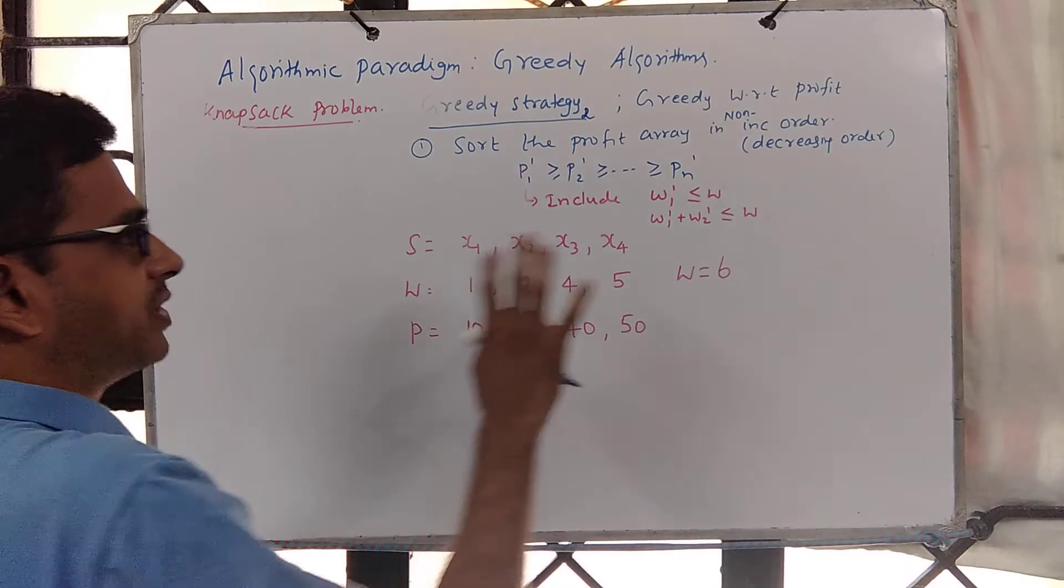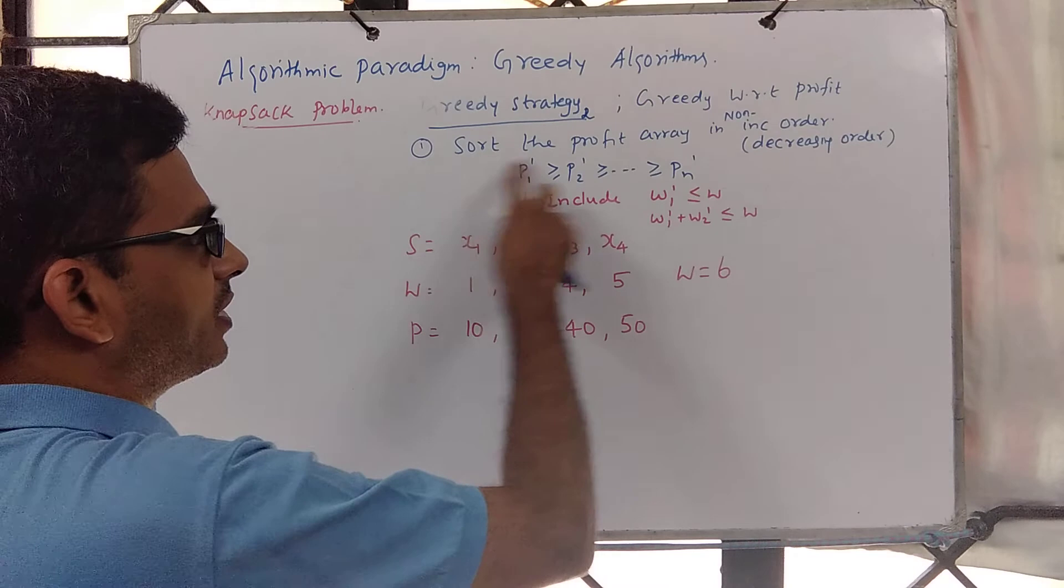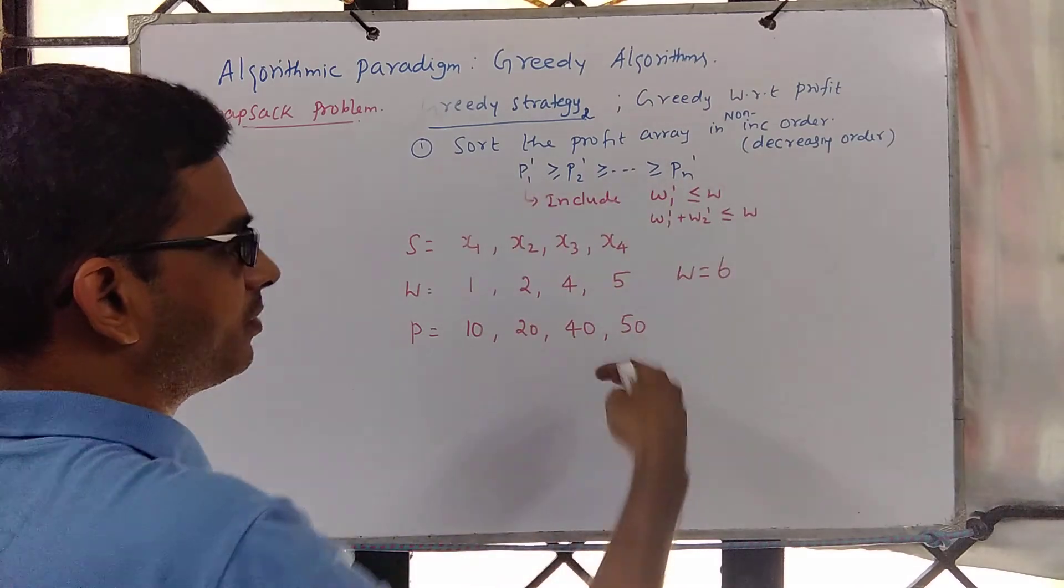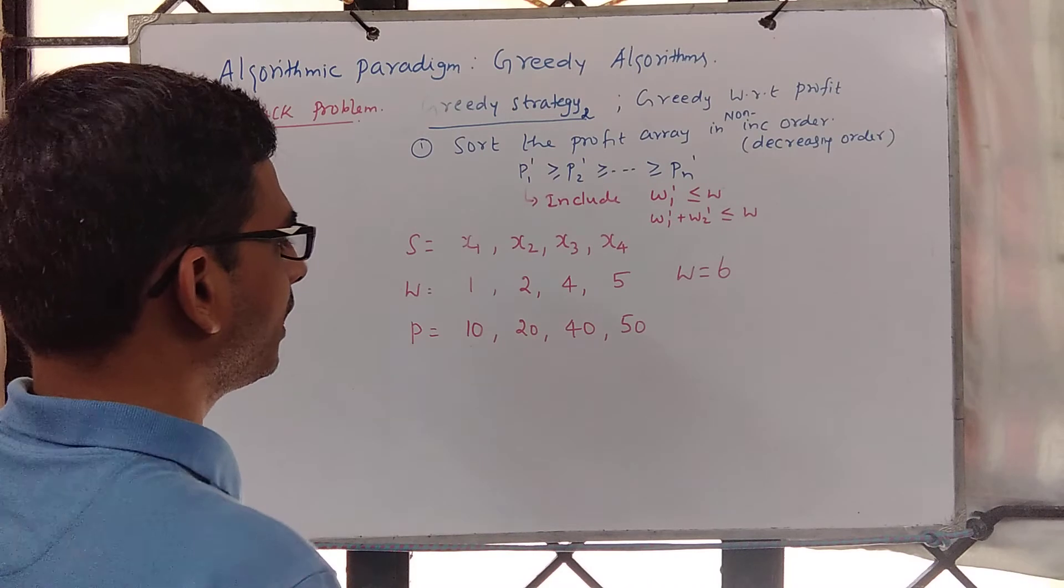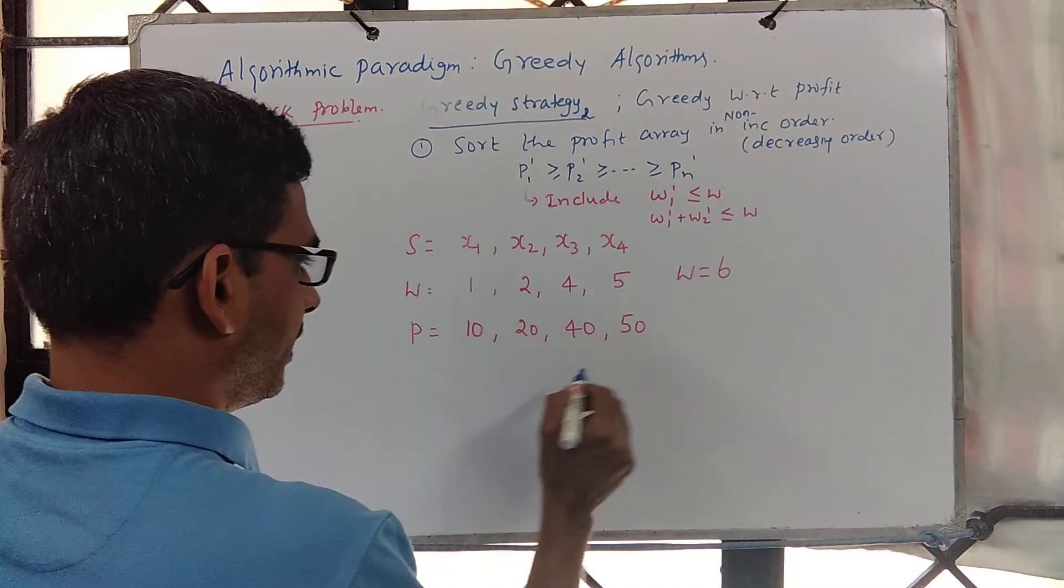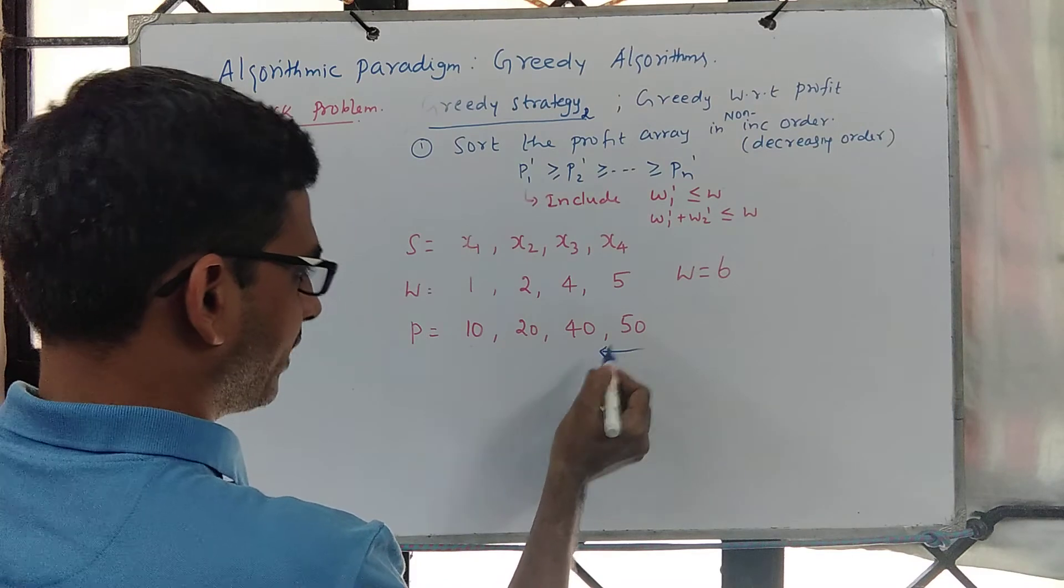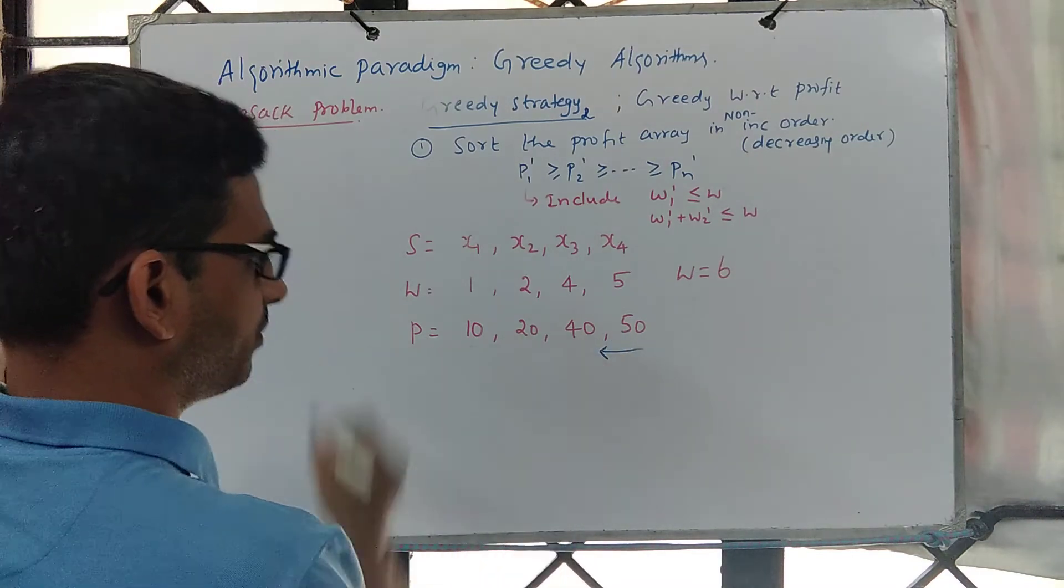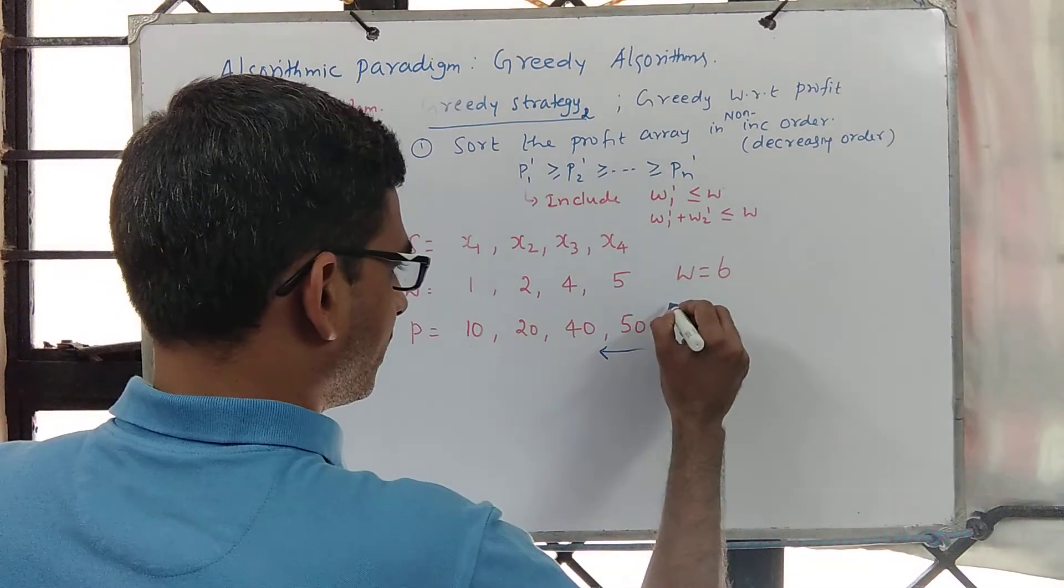The question says maximize profit, so let's sort the profit array and start including objects with maximum profit, second maximum profit, and so on. If you do that, then we will have to start from here because this is maximum, second maximum, and so on.